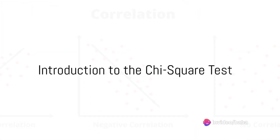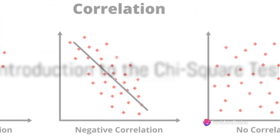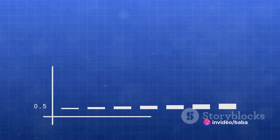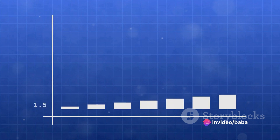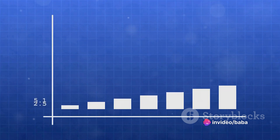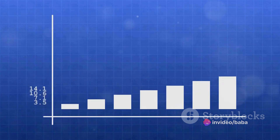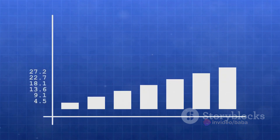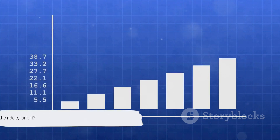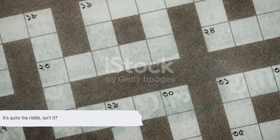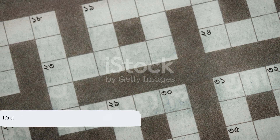Ever pondered how researchers uncover a significant relationship between two categorical variables such as smoking and lung disease? Well, there's a tool in statistics that helps crack this puzzle: the Chi-Square Test.